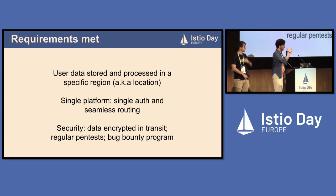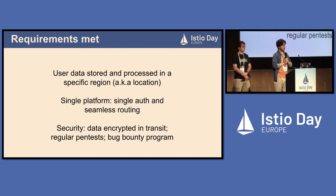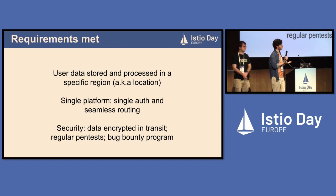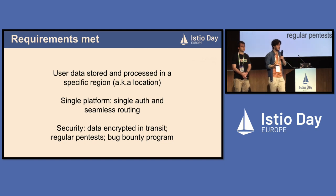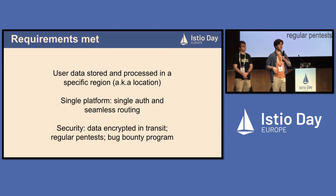At this point we've met our requirements. User data is stored and processed in specific locations with separate databases and backend instances. We have a single platform with single authentication — users just go to pigment.app and it works. EU users didn't even notice when the US platform went live; some actually saw decreased latency. For security, we encrypt data in transit between gateways, and we have regular pen tests and a bug bounty program.